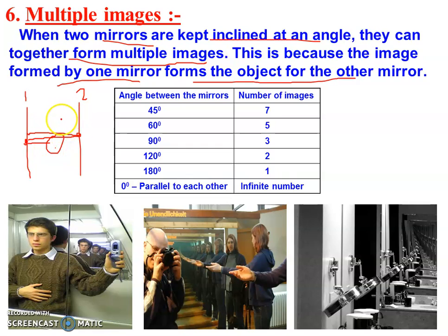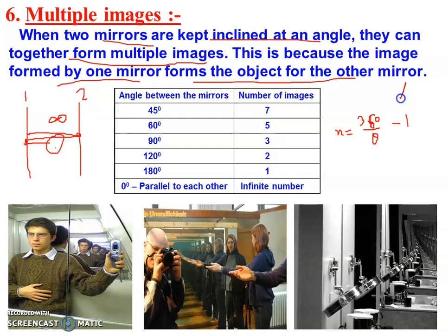When two parallel mirrors are placed facing each other, there will be an infinite number of images. There is a formula: the number of images equals 360 divided by theta, minus one, where theta is the angle between the mirrors. For example, if two mirrors are inclined at 60 degrees, we substitute: 360 divided by 60 minus one equals 6 minus 1, so there will be five images.